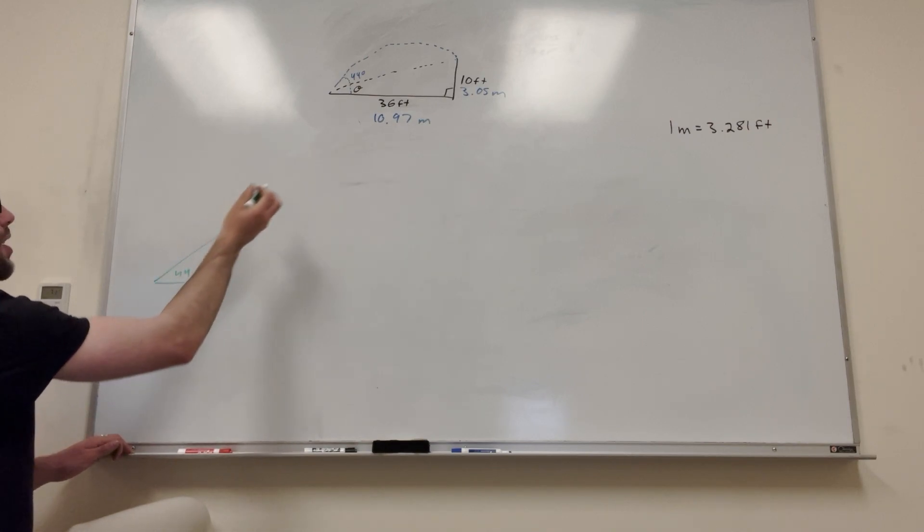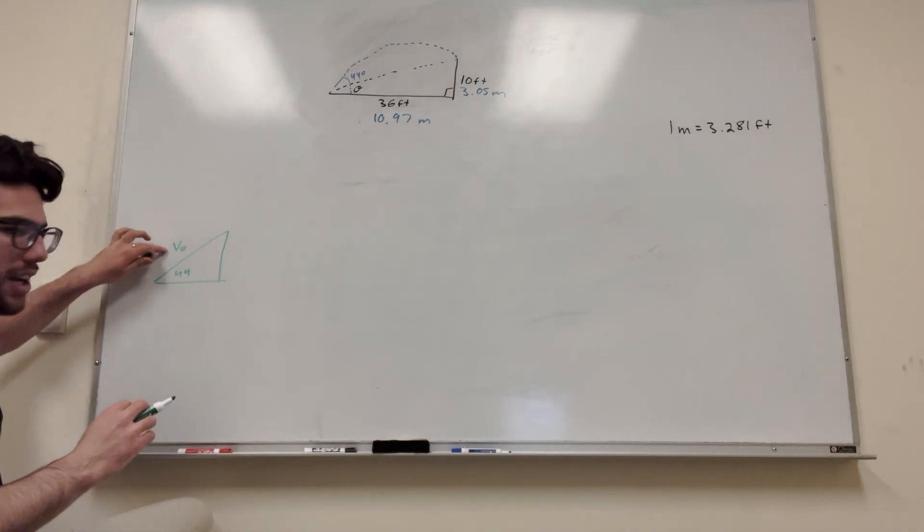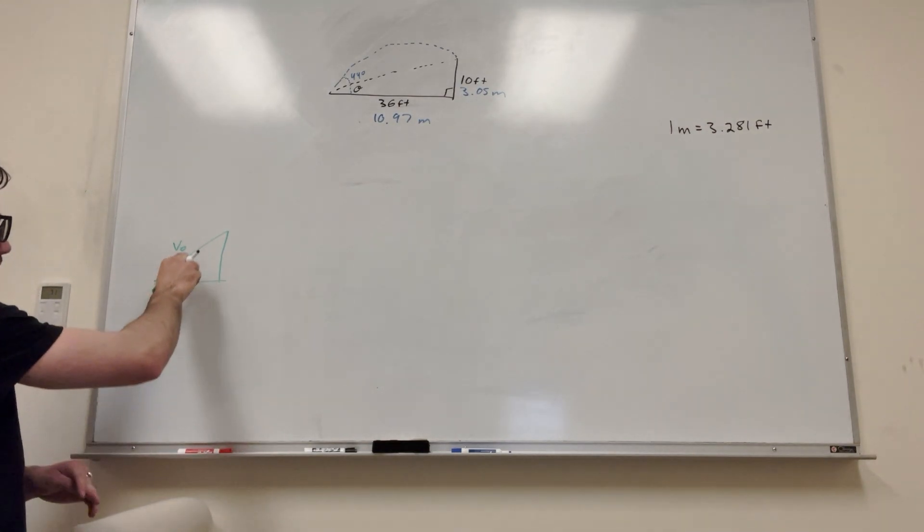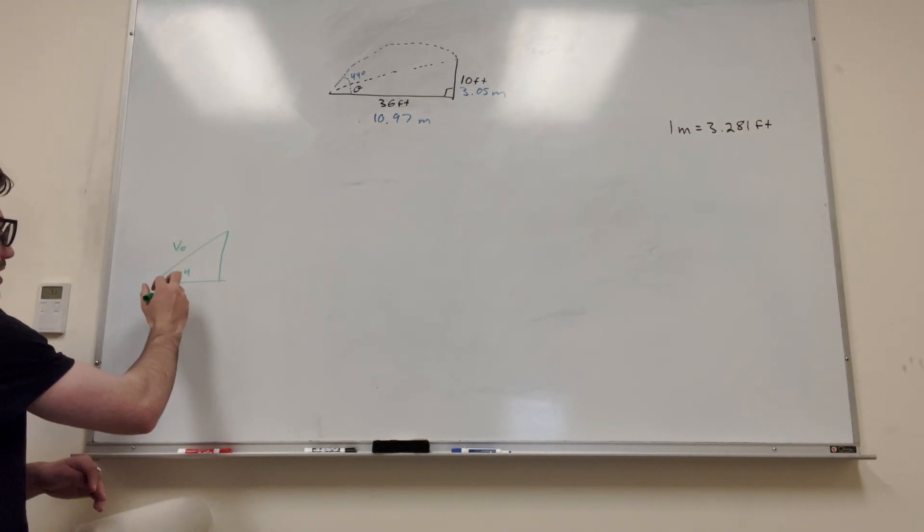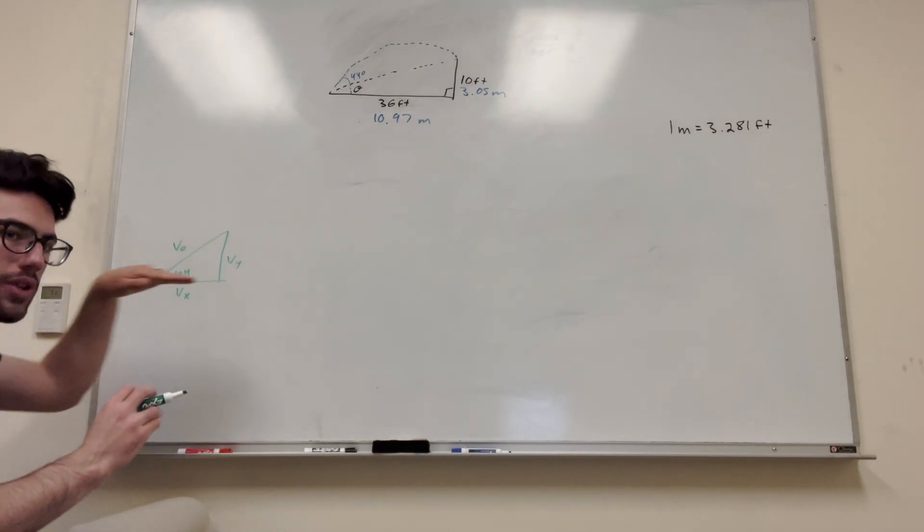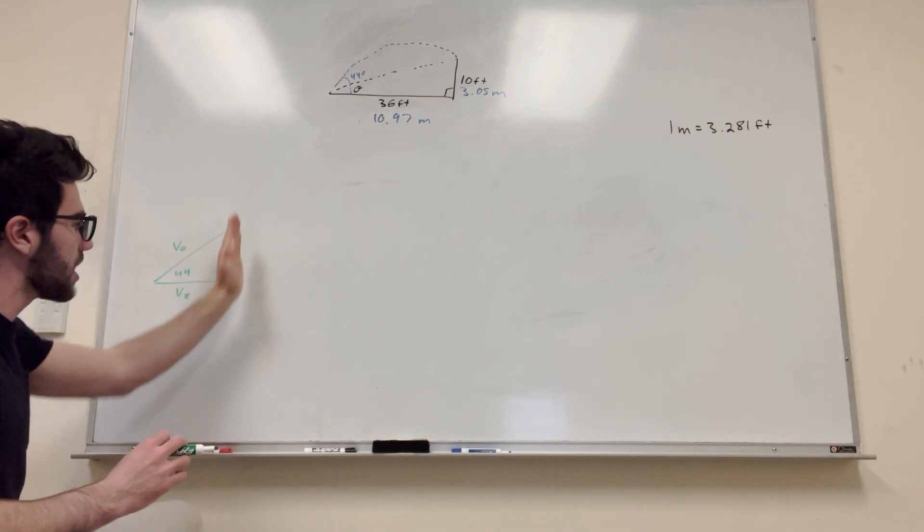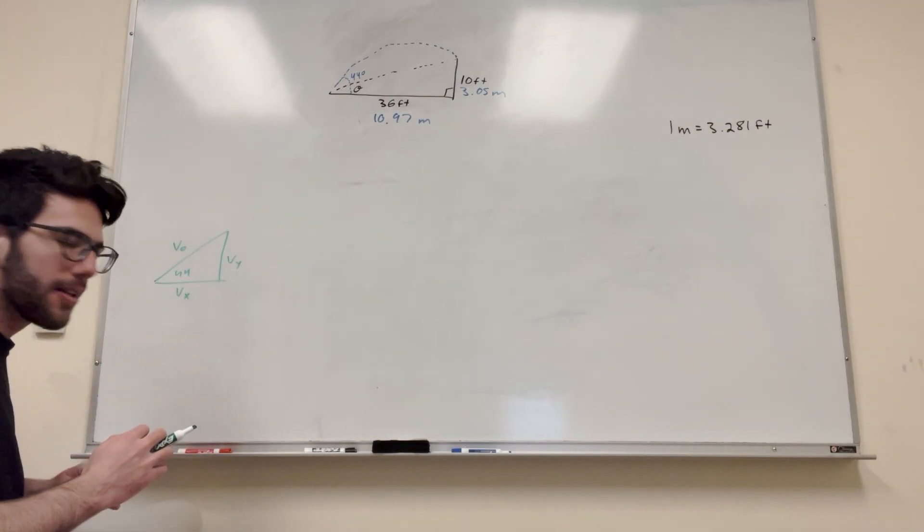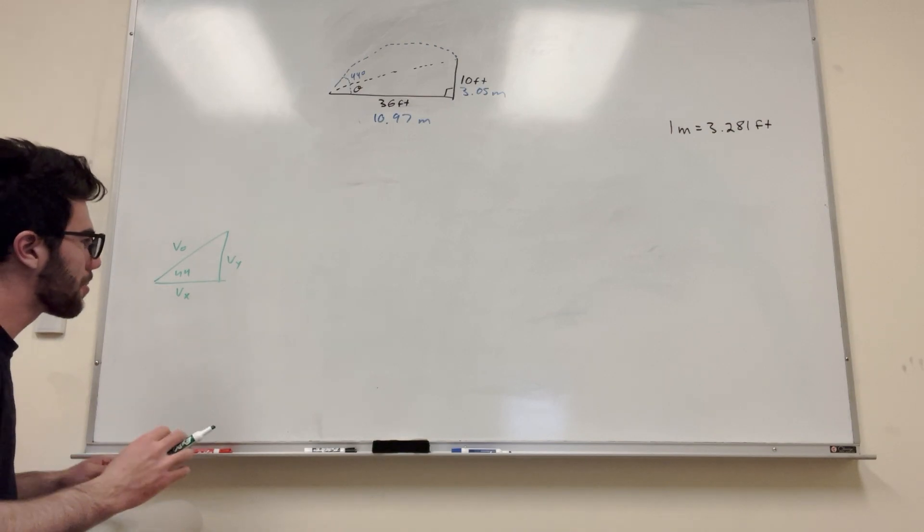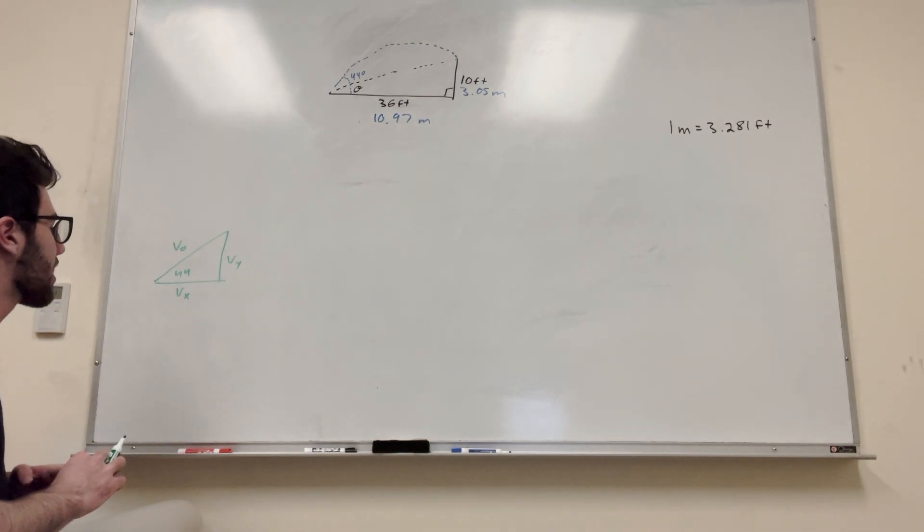Let's start by drawing a little diagram of what we have going on, because this is going to be very handy. So this is 44 degrees and we have an initial velocity of V-naught, right? So we don't know what V-naught is, but we need V-naught. But what else we know is, let's say this is V of X and this is V of Y. This is the velocity but only in the X direction, and this is the velocity only in the Y direction.